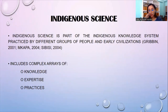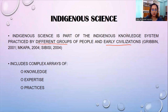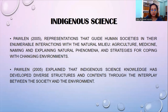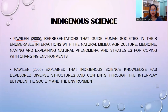Next, we have the definition of indigenous science. Indigenous science is a part of the indigenous knowledge system practiced by different groups of people and early civilizations. It includes knowledge, expertise, and practices. According to Pauilin, indigenous science represents the guides that human societies use in their innumerable interactions with the natural milieu — agricultural medicine, naming and explaining natural phenomena, and strategies for coping with a changing environment. He also explained that indigenous science knowledge has developed diverse structures and contents through the interplay between the society and their environment.